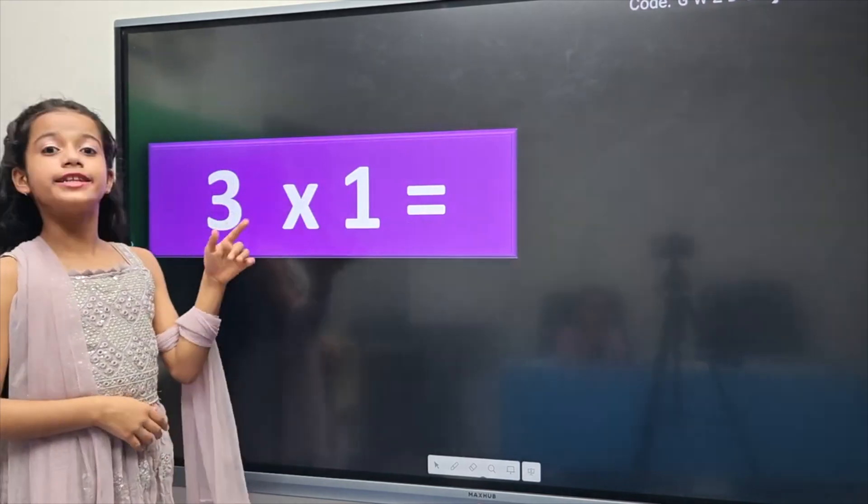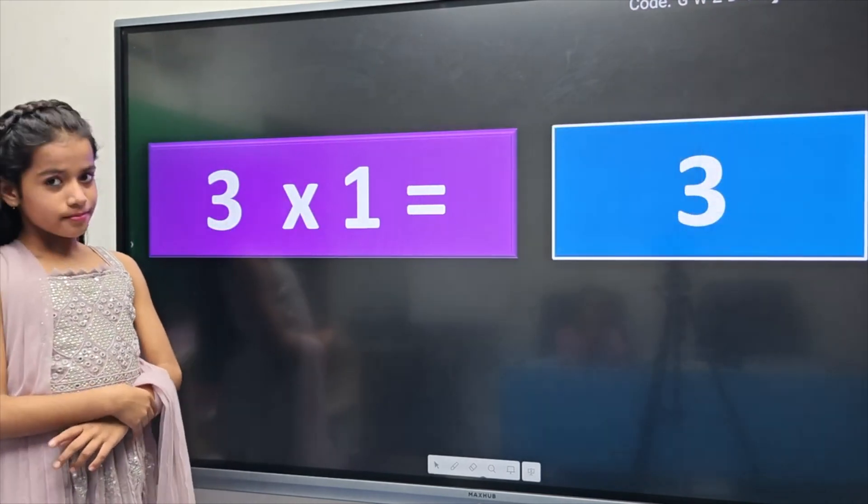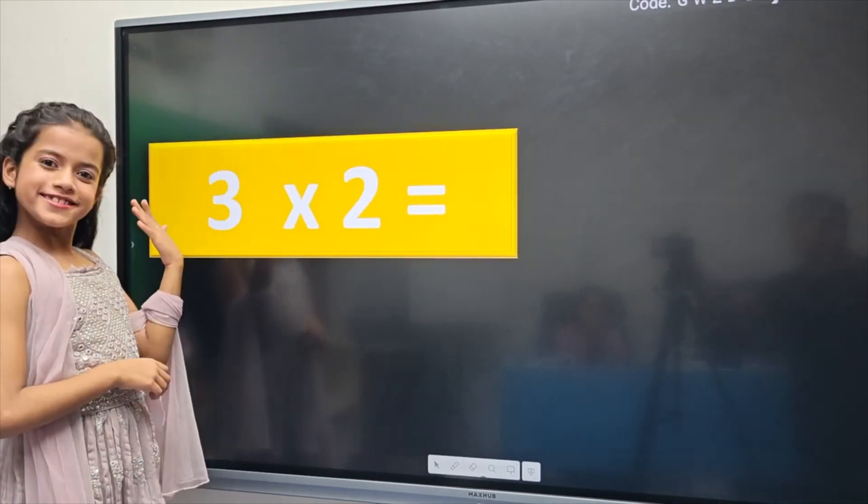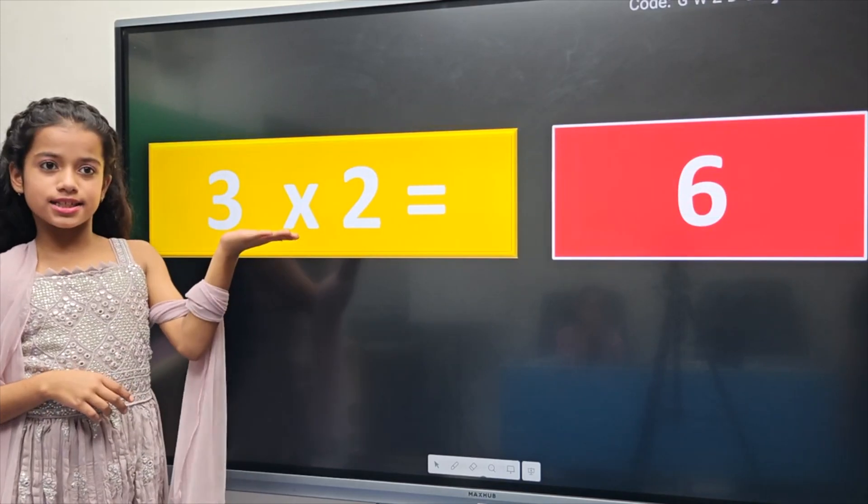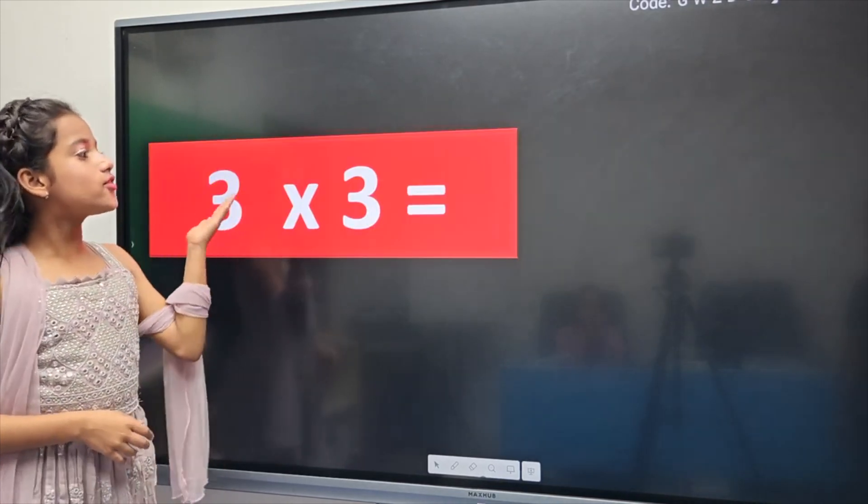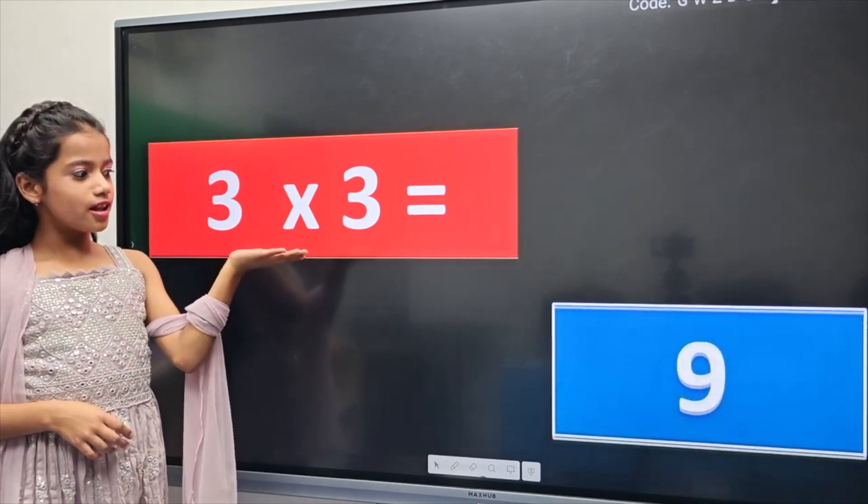Three ones are three. Three ones are three. Next. Whoa. Three twos. Three twos are six. Three twos are six. Next. Three threes are nine. Three threes are nine.